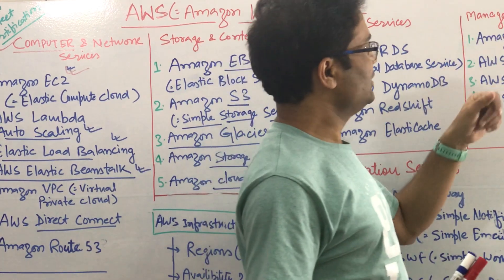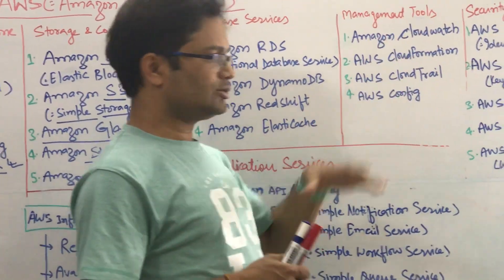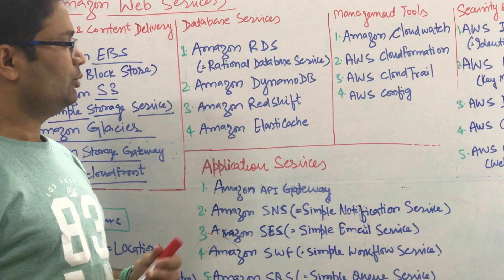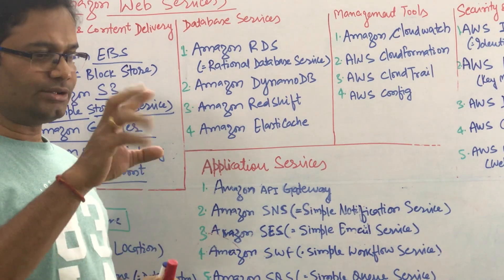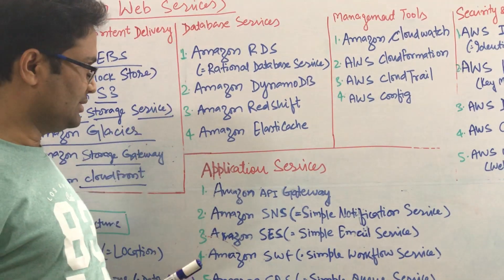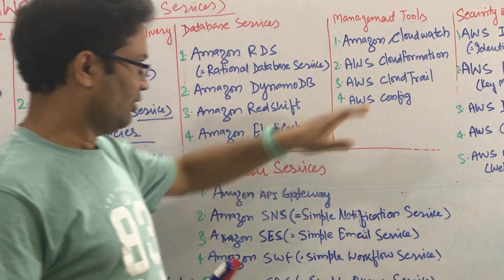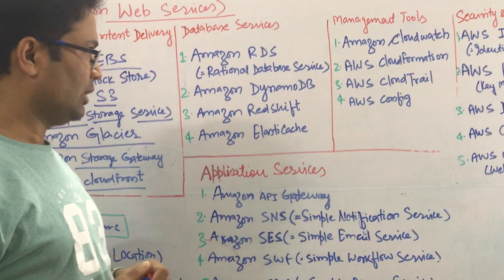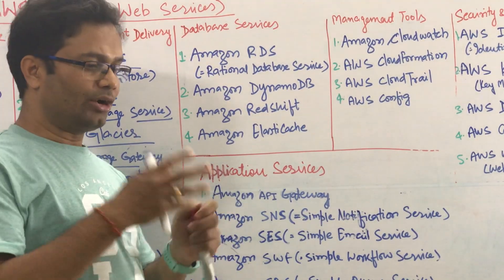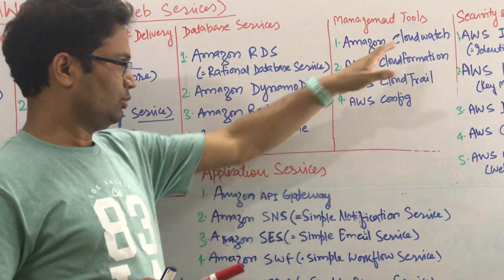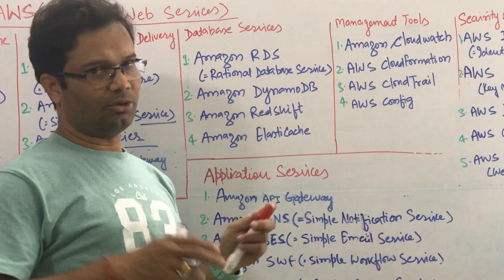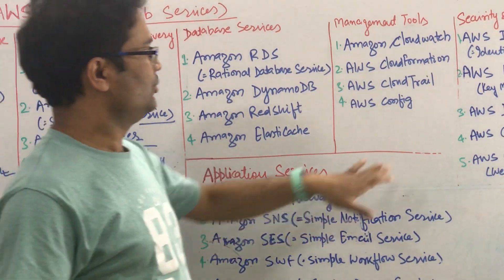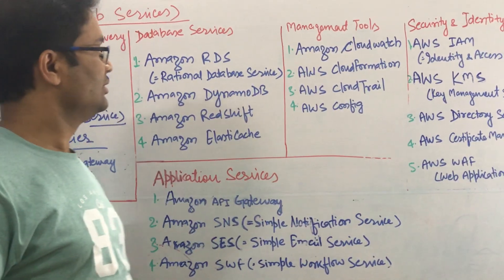Coming to the management tools — these are the tools provided by Amazon so you can monitor your AWS services. CloudWatch is for logging and monitoring all those things. If you want to check how much your billing is and monitor those metrics, you can get it through CloudWatch.